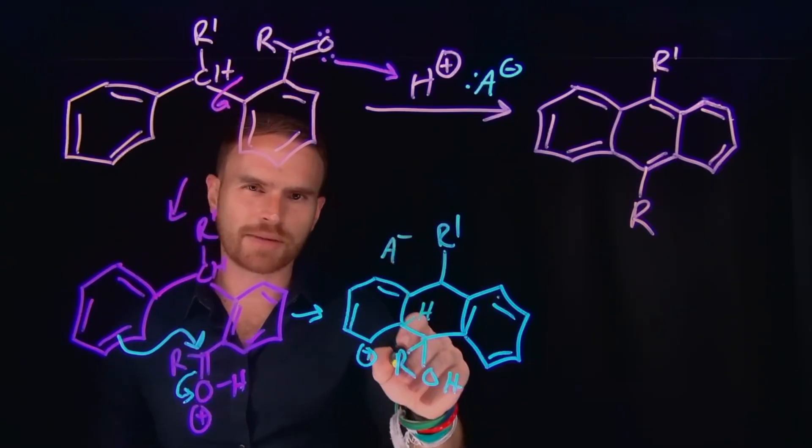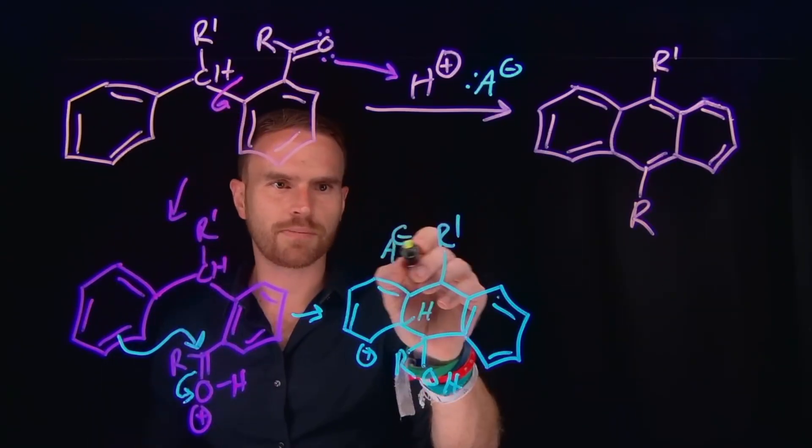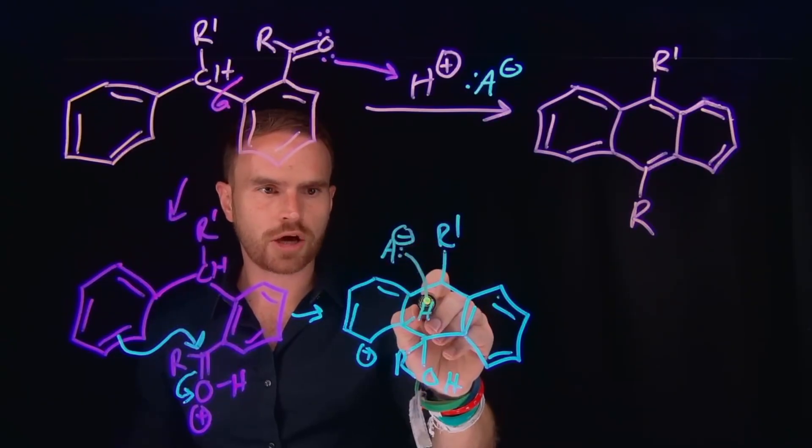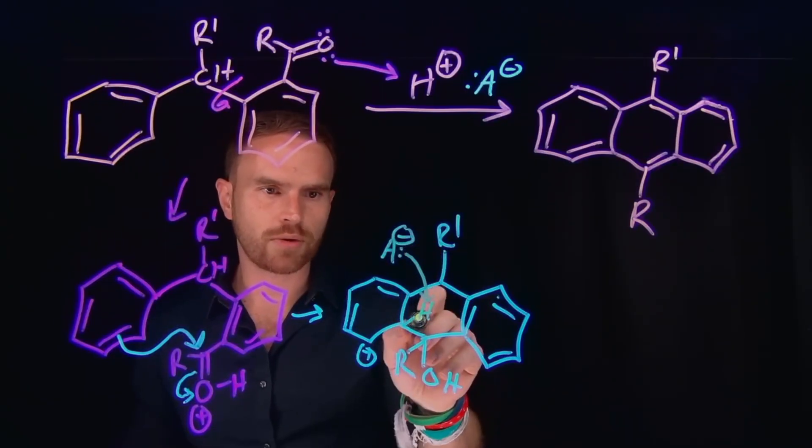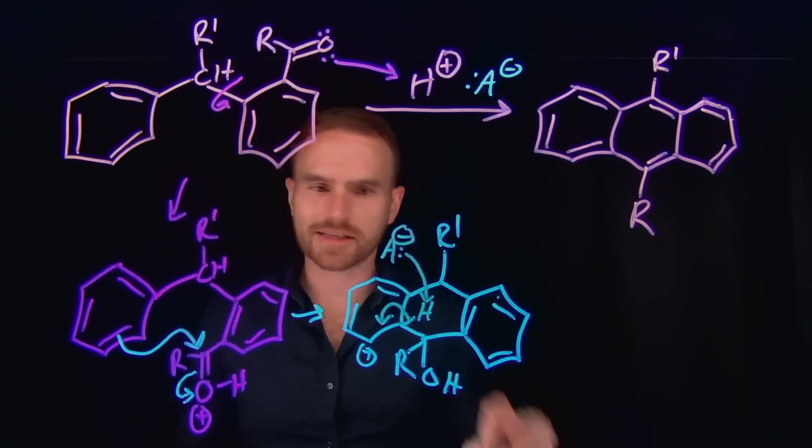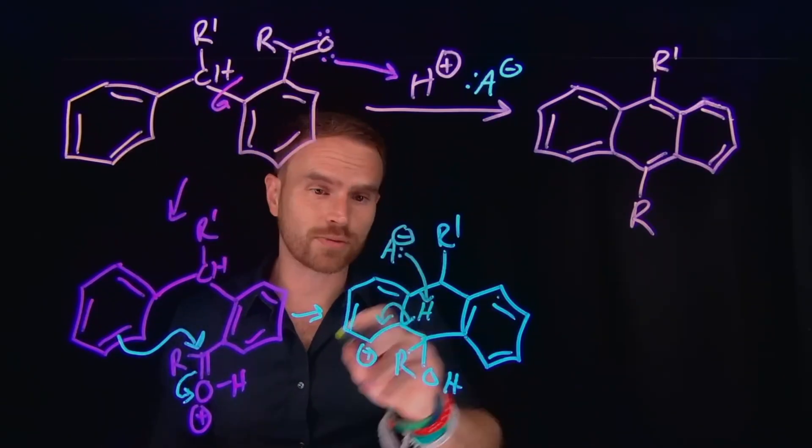Remember, this is going to be a resonance-stabilized arenium complex like you've seen previously in your organic chemistry courses when you covered electrophilic aromatic substitution, which will come and do an elimination reaction or deprotonate this. These electrons will come back down to re-aromatize this ring on the terminal side of the anthracene derivative.